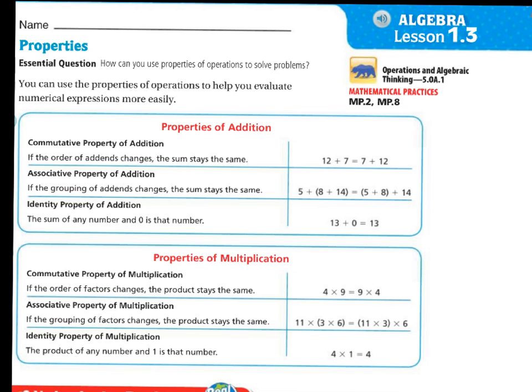Properties of multiplication. Commutative property of multiplication. If the order of the factors change, the product stays the same. So it's very similar to the commutative property of addition. 4 times 9 is the same thing as 9 times 4.